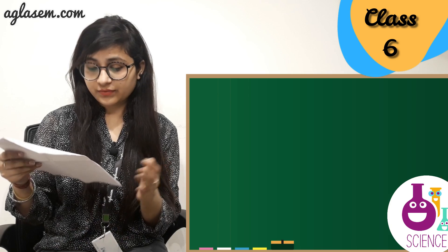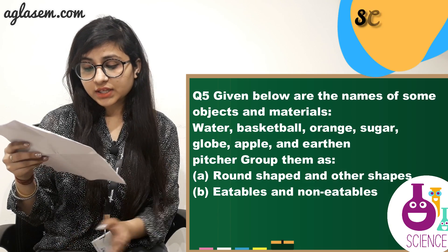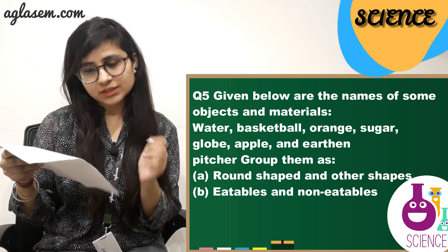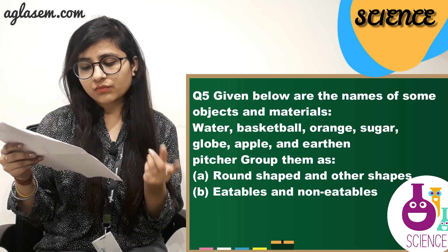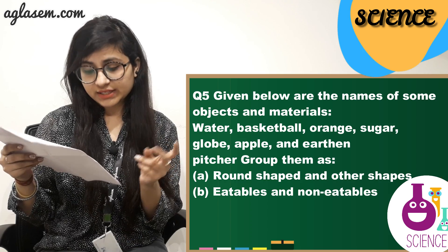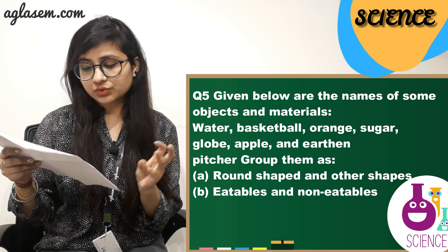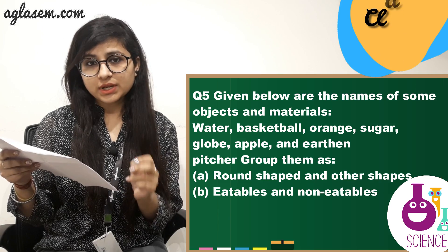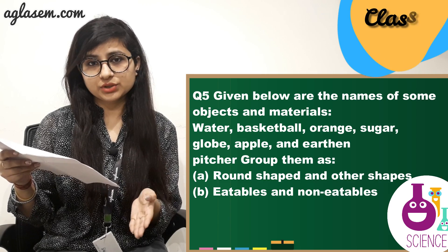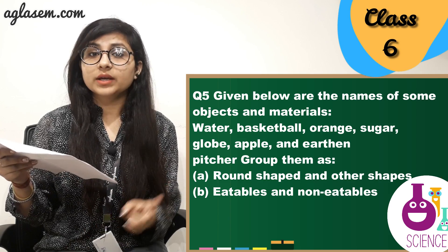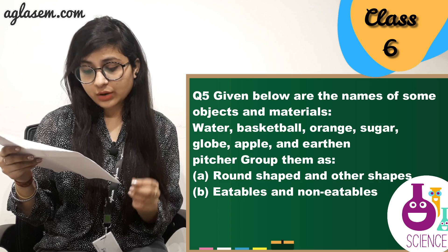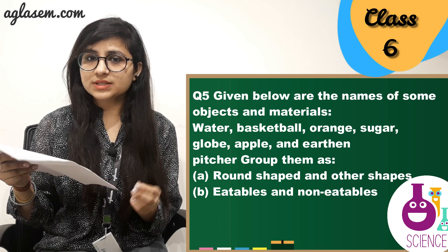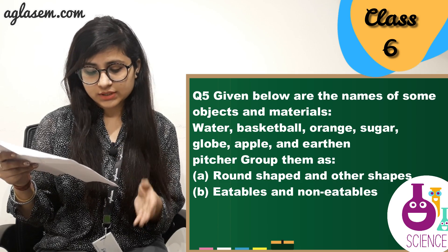Question number 5. Given below are names of some objects and materials: water, basketball, orange, sugar, globe, apple, and earthen pitcher. Group them as: A. Round shape and other shapes. B. Eatables and non-eatables.